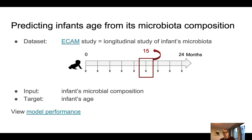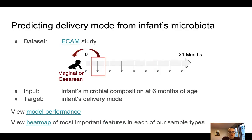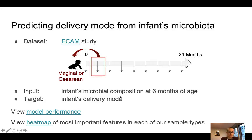Let's now look at the outputs we can get from QIIME 2 when training a classification model. We will again use the ECAM study dataset, but in this case we'll predict an infant's delivery mode based on the microbial composition of the infant at six months of age. Since delivery mode is a discrete value — vaginal mode or caesarean mode — this is a classification setting.